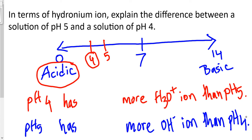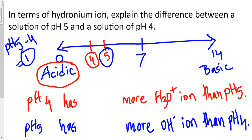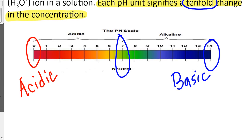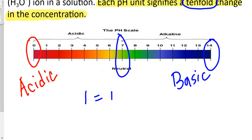We might also be asked about the amount — what is the factor of difference in hydronium ion between pH 4 and pH 5? The difference between pH 4 and 5 is only 1 unit. We go back to the rule that each pH unit signifies a 10-fold change in concentration. So if the difference is 1, the factor is 10. If the difference is 2, the factor is 100. If the difference is 3, the factor is 1,000 — after 1, you have that many zeros.